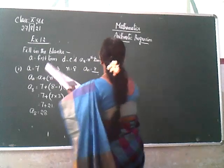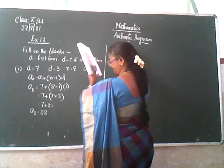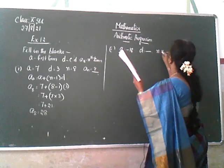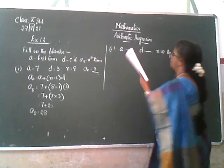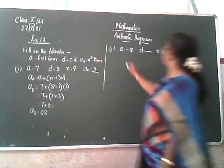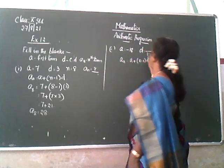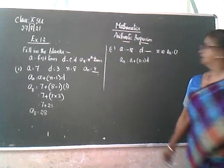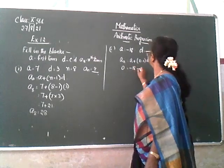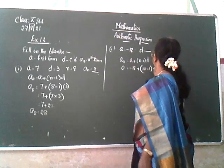The second fill-in-the-blank. A is minus 18, D you should find out, N is 10, and AN is 0. Let me substitute again. You know the formula: AN is equal to A plus N minus 1 into D. AN is 0, A is minus 18, N is 10 minus 1 into D.